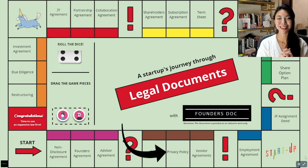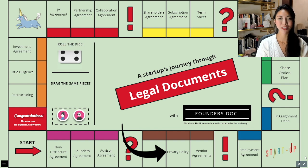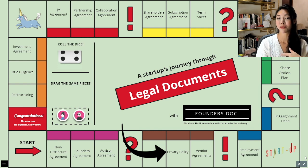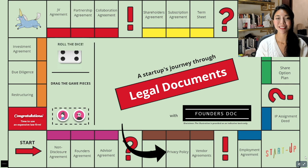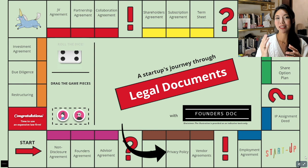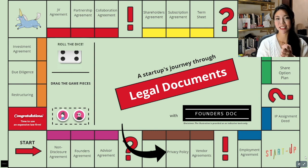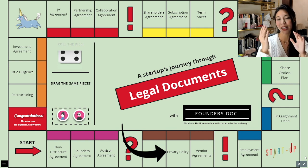Number two: disclosure. You'd like to tell your end user who you're disclosing their personal information to and why. For example, if you have a business partner that you need to disclose personal information to in order to operate your business, you'd like to set that up in your privacy policy. Number three: telling your end users what rights they have with respect to their personal information. Given the growing importance of personal data protection in recent years, it may be wise to get a good set of privacy policy terms in place.